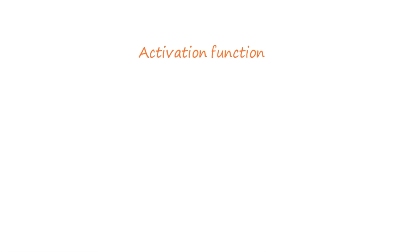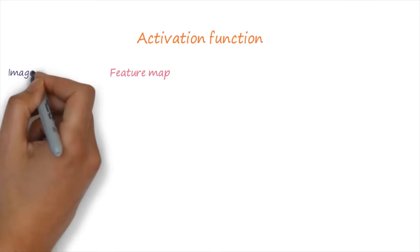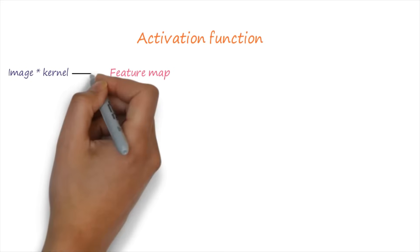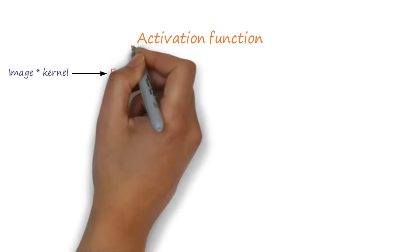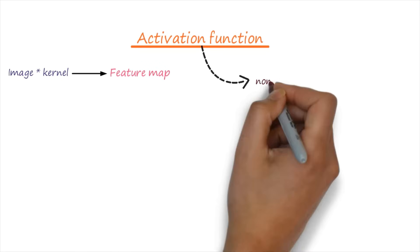Now we come to the second part. After the first step, the second step is known as finding the activation function for CNN. The first step is over, meaning we have already obtained the feature map. Whenever we get the feature map from the image and the kernel, the next step is to find an activation function to use. While discussing ANN, I already explained that the activation function is used to induce non-linearity.